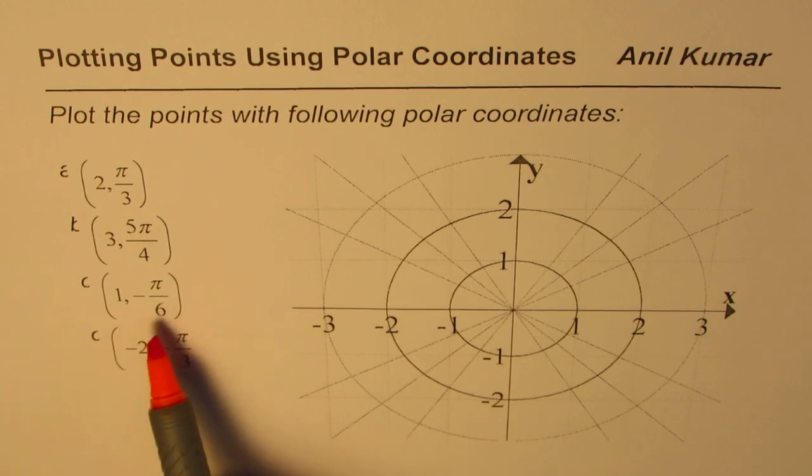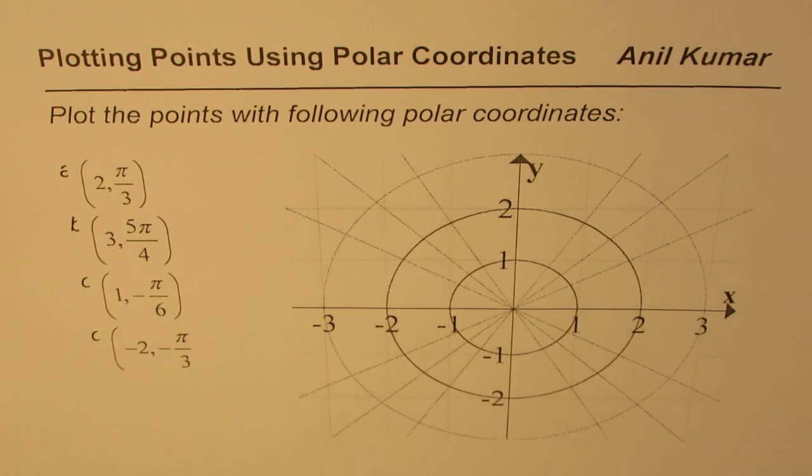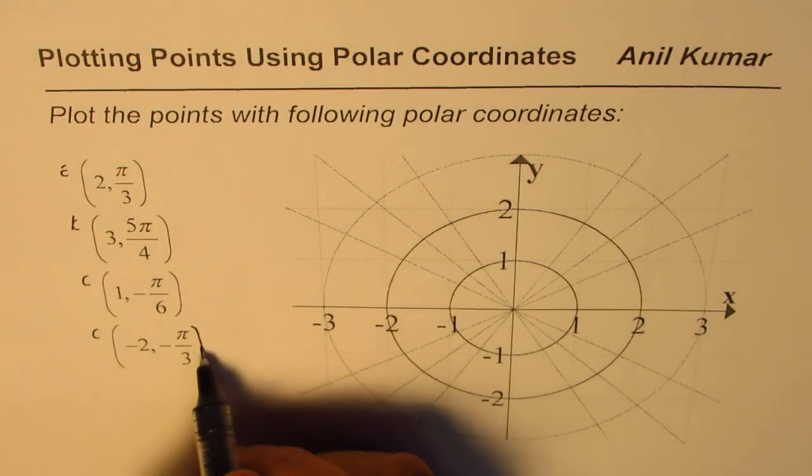Then we have (1, -π/6) and we have (-2, -π/3). So these are the four points which you have to plot on the polar coordinates.